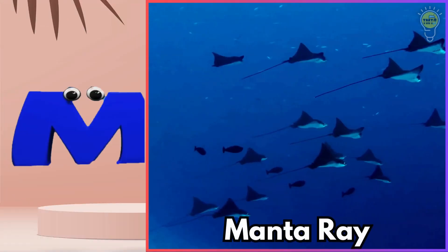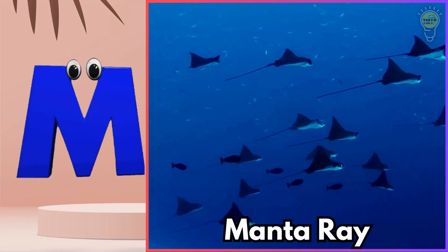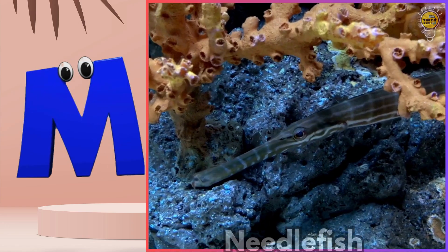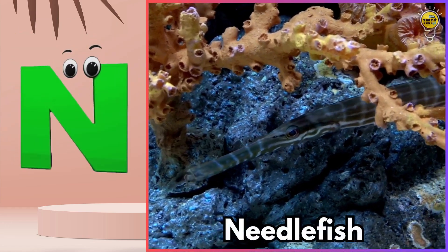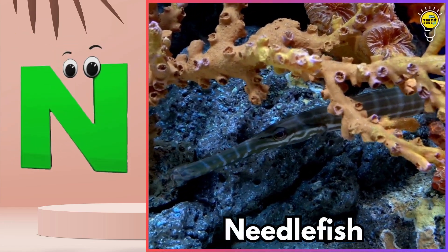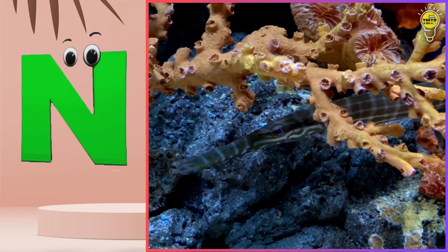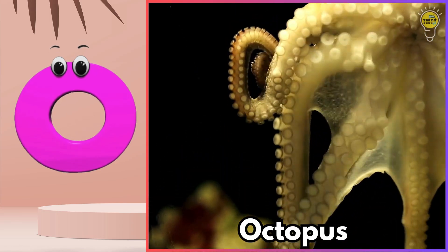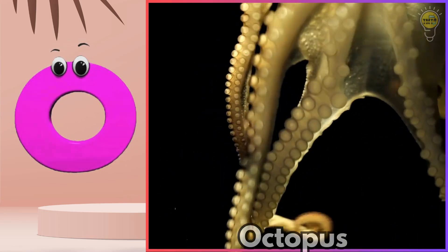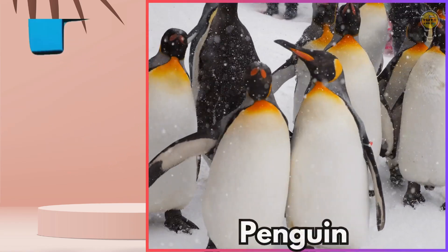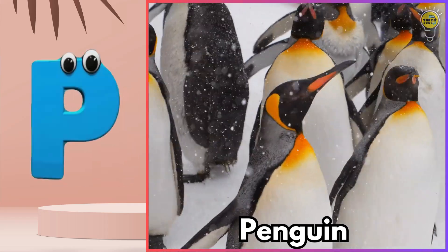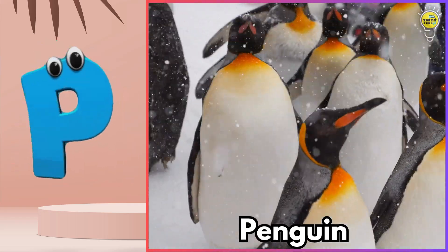M is for manta ray. Muh, manta ray. N is for needlefish. Na, needlefish. O is for octopus. O, octopus. P is for penguin. Puh, penguin.